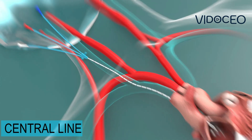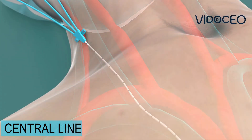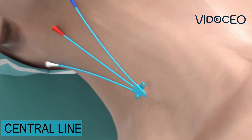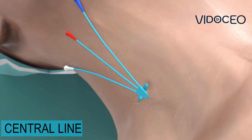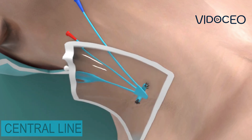The wire is removed leaving the catheter in position. The catheter might be stitched into place and a sterile dressing is placed over the insertion site.